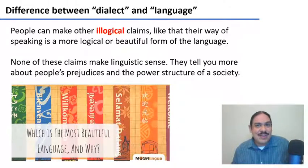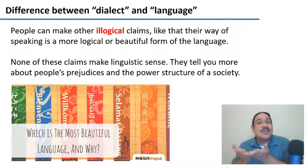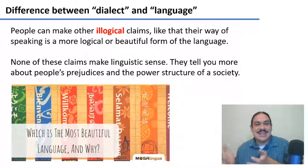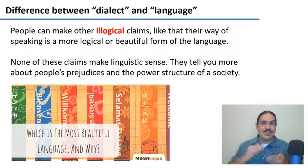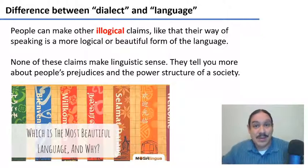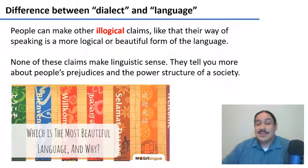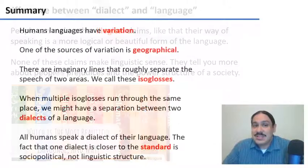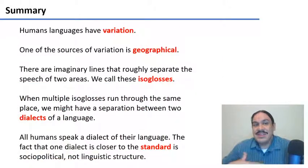Moreover, the people who make those claims also tend to say their way of speaking is more logical or even more beautiful, but these claims are unfounded. They tell you more about the power structure of society — about who gets to call their dialect better — than anything structural. As we've seen throughout the class, every dialect of a human language is incredibly complex and amazing, from its phonological rules to its syntax. There's no dialect that is better, more logical, or more beautiful than any other.